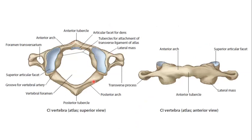There are lateral masses on each side, which have the foramen transversarium. On the posterior arch, posterior to the superior articular facet of the transverse process, there is a groove for the vertebral artery. On the medial side of the transverse process there is a tubercle for the attachment of the transverse ligament of the atlas. So the parts are: anterior arch, posterior arch, and the lateral masses.